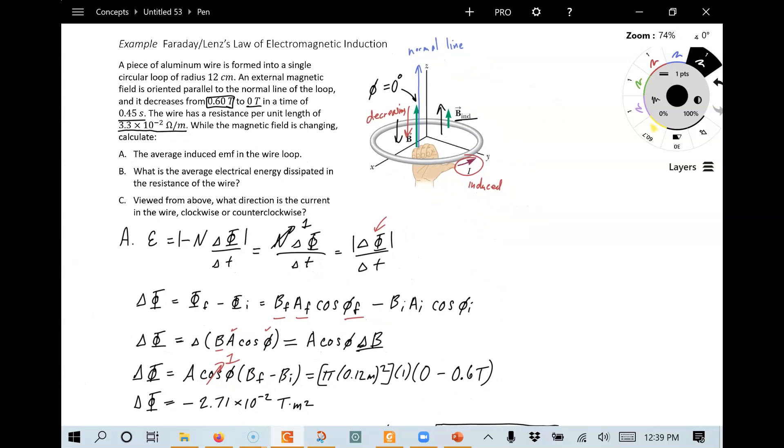Now, that's how we answer part C. It says, viewed from above, what direction is the current in the wire, clockwise or counterclockwise? Well, the answer was already shown in the picture. But we know the thinking process is because the external field is shrinking, it's going down, nature doesn't like that. And it's going to respond by creating its own current in this direction because that is going to produce an upward-pointing magnetic field that's induced to counteract the decreasing external field.